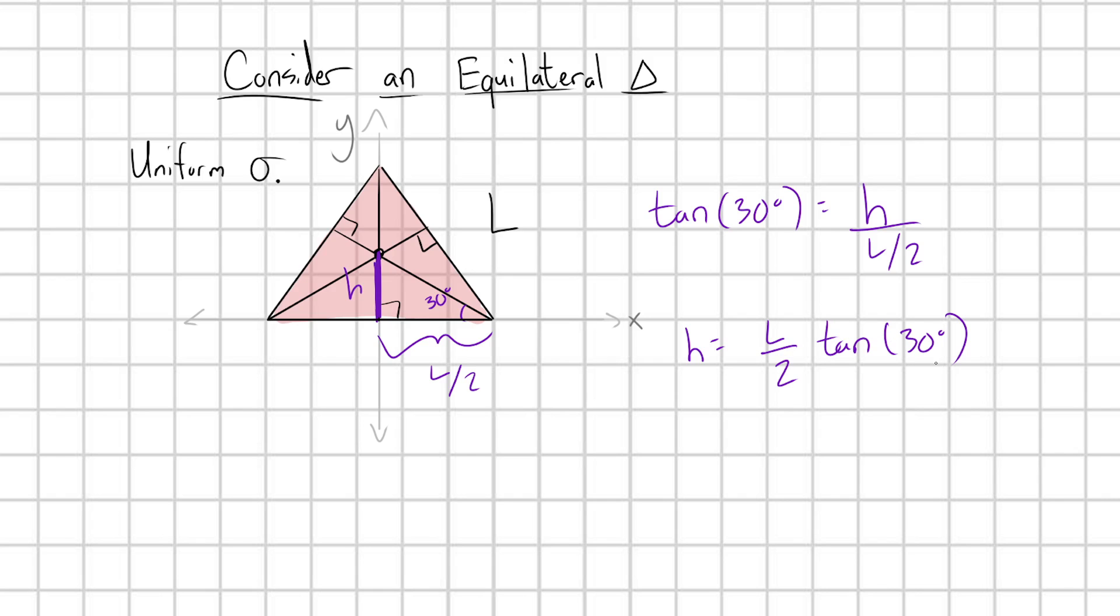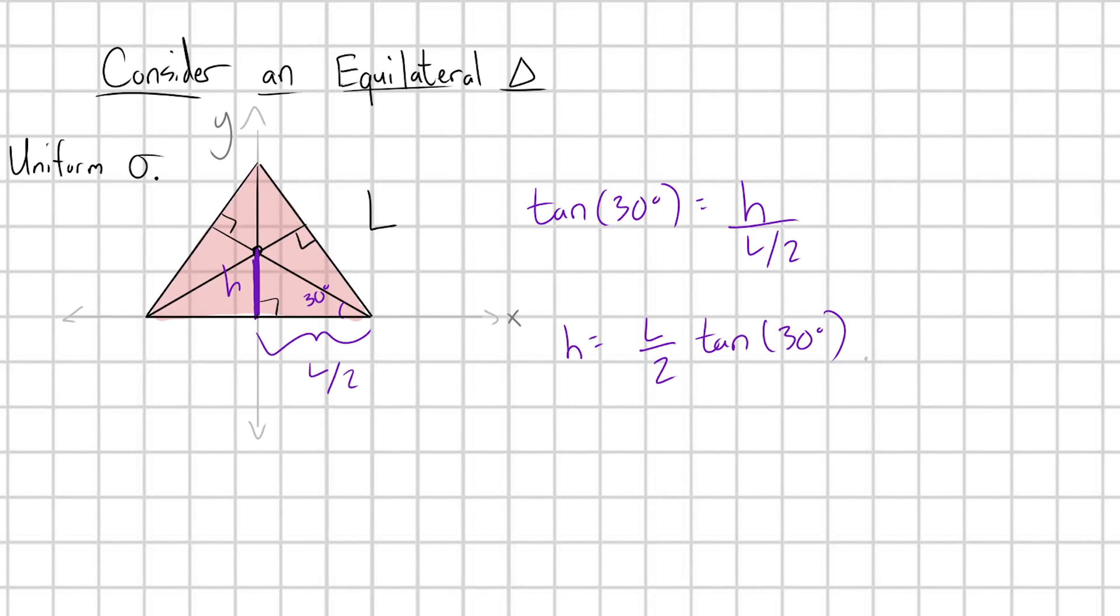And you could either have this tangent memorized, or maybe you need the extra step, you could write this as sine of 30 degrees over cosine of 30 degrees, and sine of 30 degrees is going to be 1/2, cosine of 30 degrees is going to be √3 over 2.